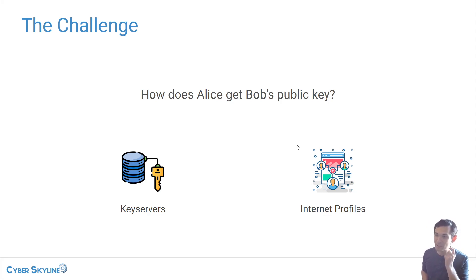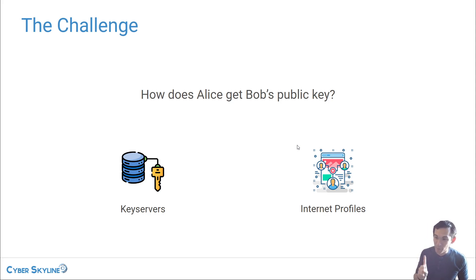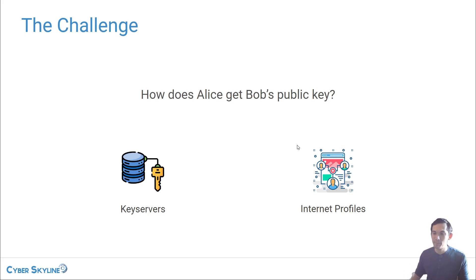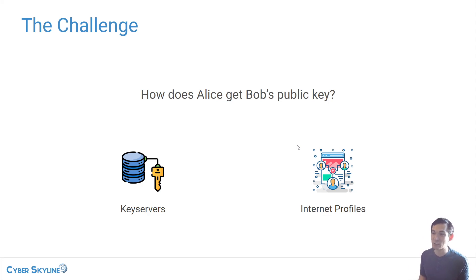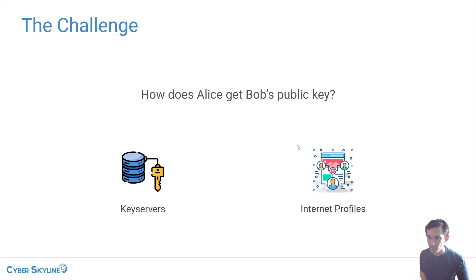This is not a perfect solution — maybe Charlie made a mistake and signed the wrong key, or was social engineered into thinking someone was Bob when they weren't. So you probably don't want to rely on just one person doing the vouching. The more you build out this web of trust, the more people vouching for a public key and the bigger the overlap between who Alice trusts and who is vouching for Bob, the more certain she can be — but she can never be completely sure. It's about the level of trust and comfort.